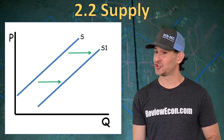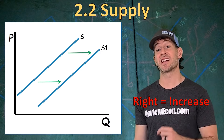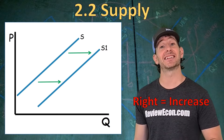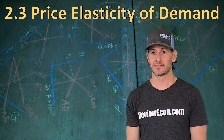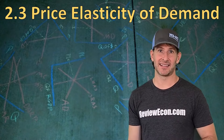If any of those things change, it causes a shift in the supply curve. A rightward shift, just like with demand, is going to be an increase. Make sure you understand left and right instead of up and down — a downward shift for supply is actually a rightward shift, and that's an increase. A leftward shift is going to be a decrease, meaning lower quantities supplied at every price.